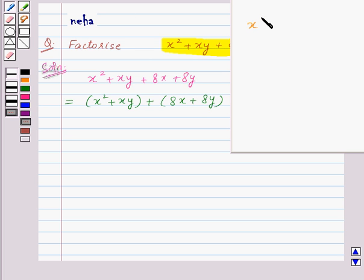Now, x squared plus xy can be written as x into x plus x into y. Taking the factor x common, we will get x into x plus y. So, writing x squared plus xy as x into x plus y.